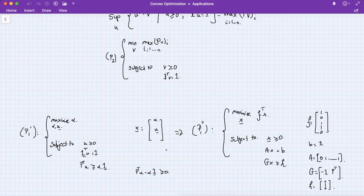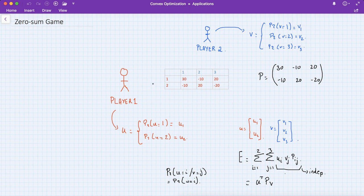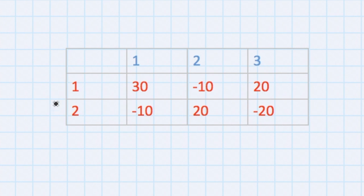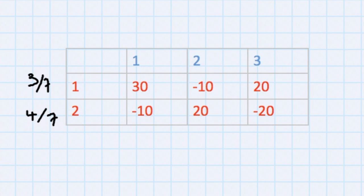We know player one's optimal strategy. What about player two — should he choose moves uniformly, or what? We can formulate the same problem from player two's perspective. If we rewrite problem P2 using the same tricks, we arrive at an analogous linear program.